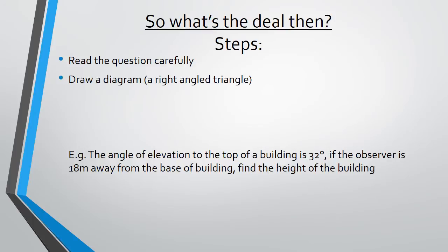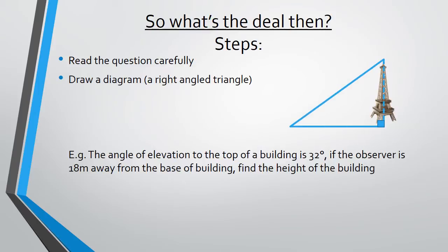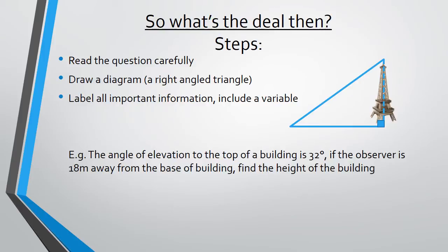Alright, we've read and understood it. Next, draw a diagram — we're usually going to end up with a right angle triangle. We'll start by drawing a building and putting our right angle triangle on it. We're going to label all the important information and include a variable. The angle of elevation is 32 degrees — from the horizontal up — and the observer is 18 meters away from the base. We're asked to find the height, so that's where our variable x comes in.